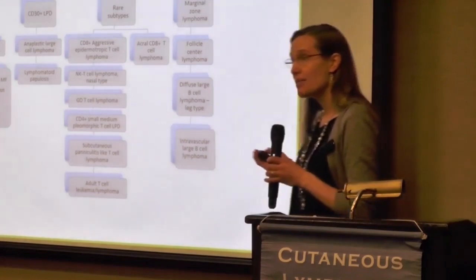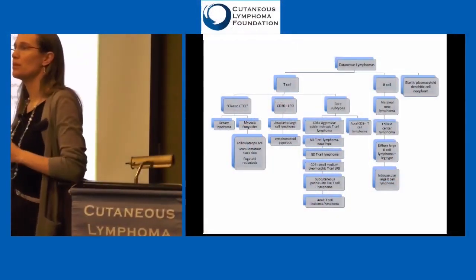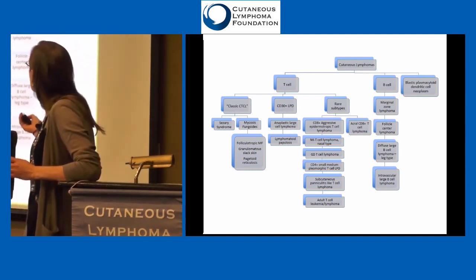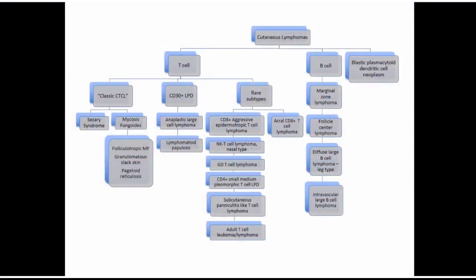B-cell lymphomas: not as many types. The top two are considered indolent — those are the slower-growing B-cell lymphomas. The third, diffuse large B-cell lymphoma, behaves a little more aggressively and is treated in a different way. There's another very rare subtype, the intravascular large B-cell lymphoma, which we almost never see. There's also increased talk about blastic plasmacytoid, which is technically part of the cutaneous lymphomas because there's a new drug — it's actually a different cell type they've discovered.